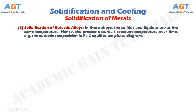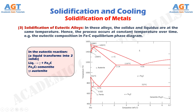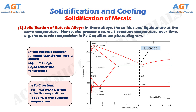3. The solidification of eutectic alloys. In these alloys, the solidus and liquidus are at the same temperature. Hence, the process occurs at constant temperature over time. For example, the eutectic composition in the Fe-C equilibrium phase diagram. In the eutectic reaction, a liquid transforms into two solids. In the eutectic reaction, liquid is transformed into austenite — represented by gamma — and cementite, represented by Fe3C. In the iron-carbon system, 4.3 weight percentage carbon is the eutectic composition, and 1147 degrees Celsius is the eutectic temperature.